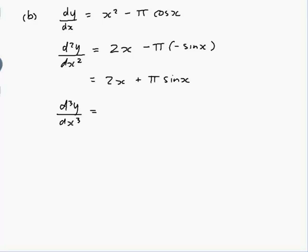So the derivative of 2x is just 2. And then we differentiate π sine x, so the π stays there and we times by the derivative of sine x. Derivative of sine is plus cos. And so that's the third derivative, which is all we needed to do.